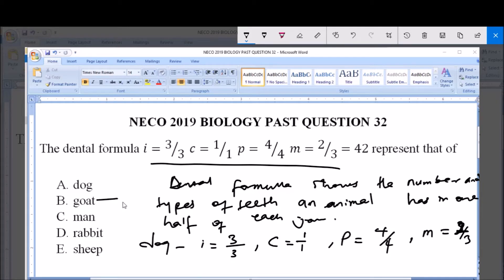Option B, option D, and option E are all herbivores. Remember, dog is a carnivore and carnivores have the same dental formula. But goat, rabbit, and sheep are herbivores and they all have the same dental formula.